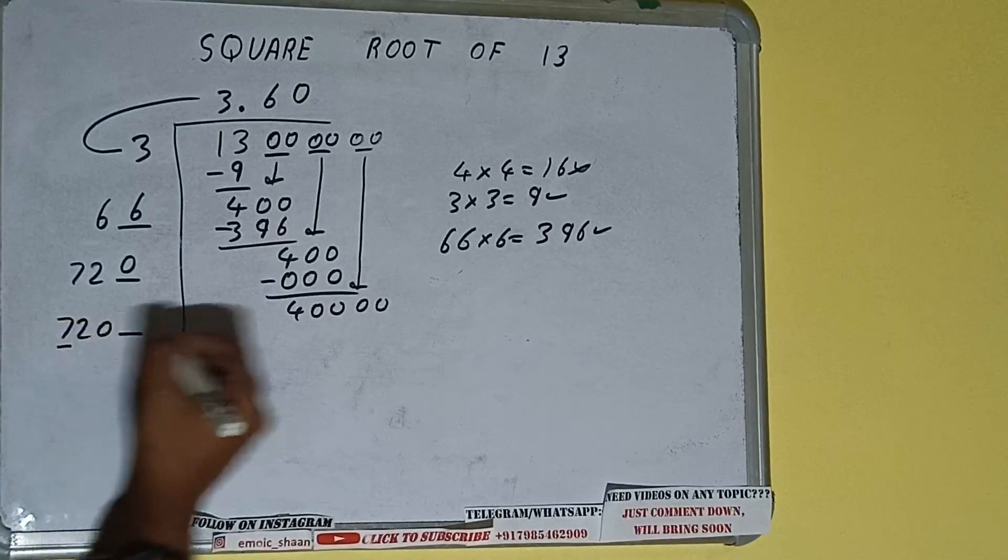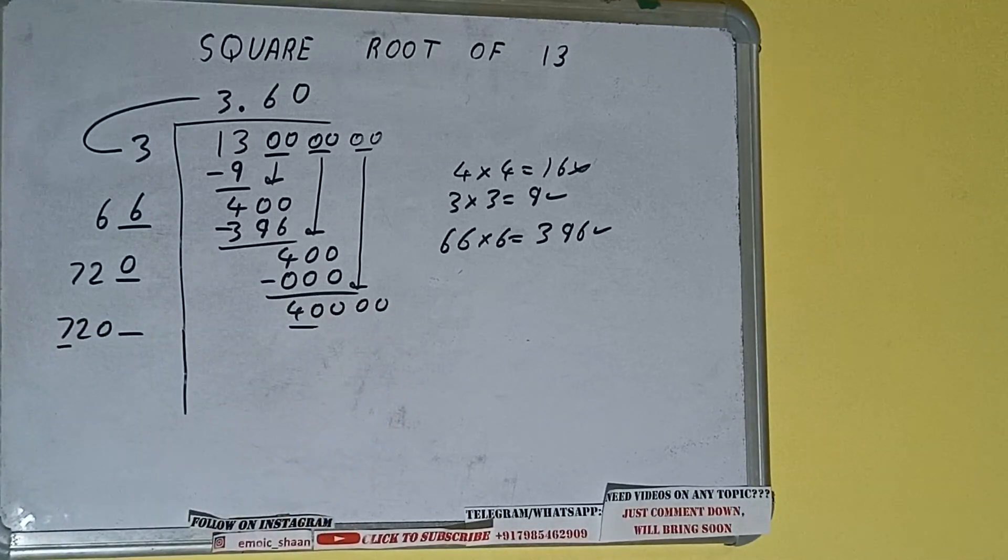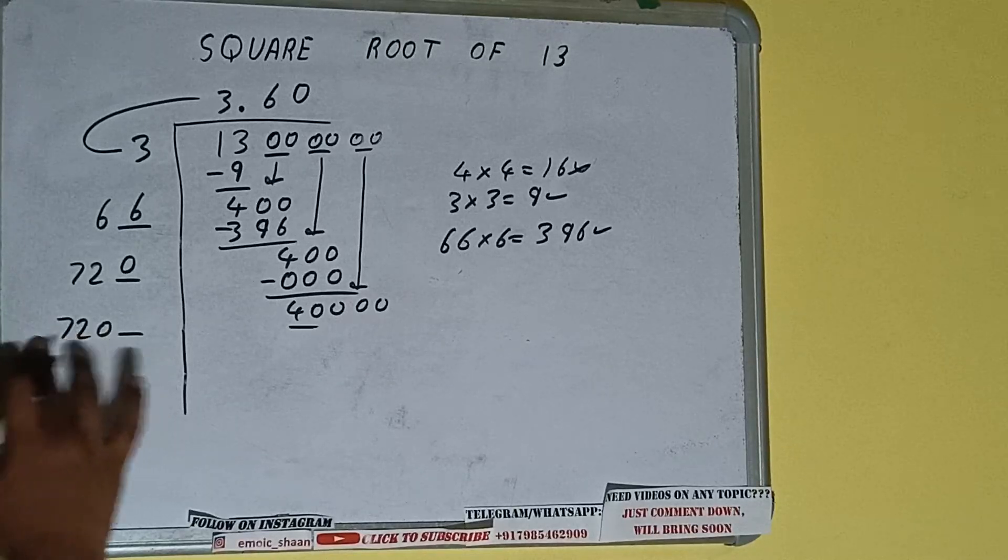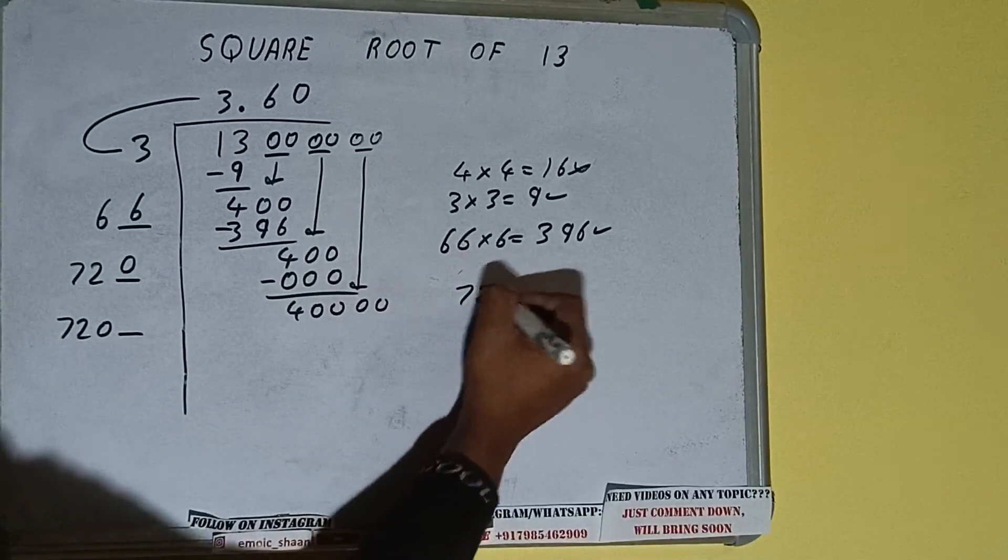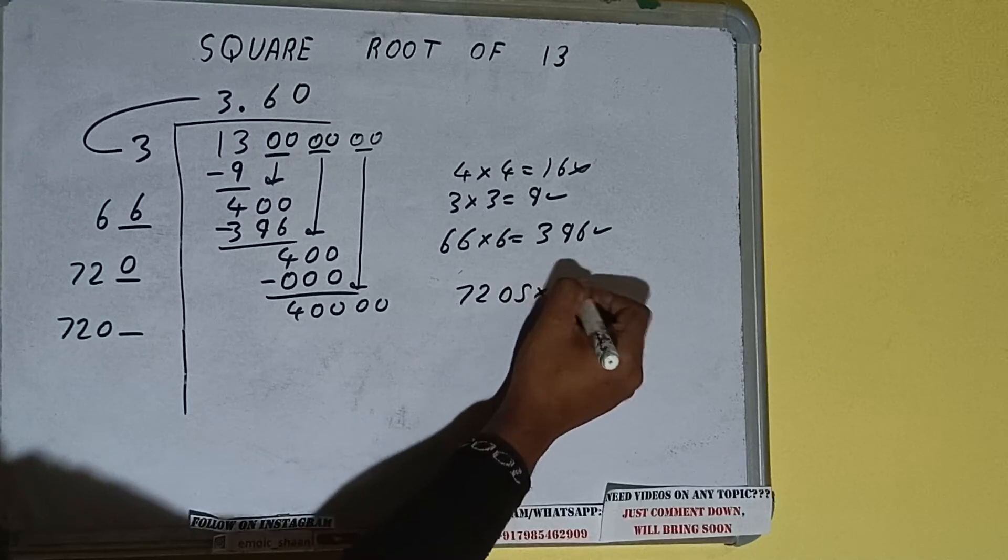Now compare this 7 with this 40. So 7 times 5 is 35, right? So we can try 5 times. 7205 into 5 we can try.